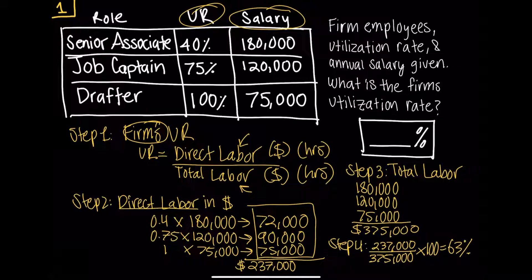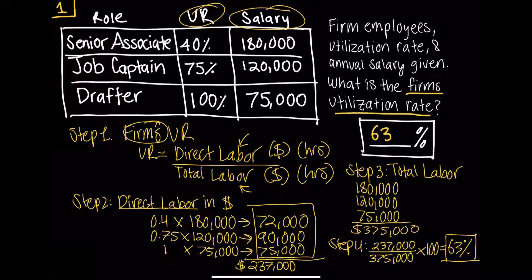So 63% of the firm's employees' time is currently billable on project-related expenses. Our final answer is 63%. We were able to figure that out because we understood what the question was asking us to find — we knew it was asking for the firm's utilization rate. The first tip is: understand what the question is asking you, break it down, identify the actual formula, and look for the exact variables you need to plug into that formula.